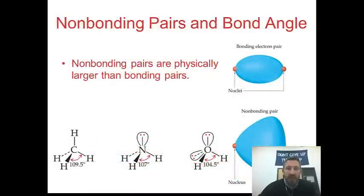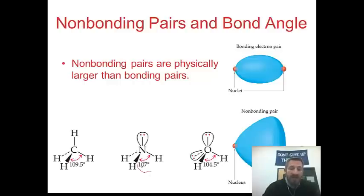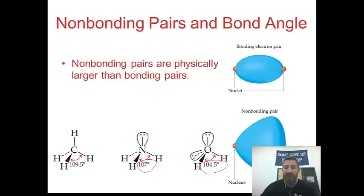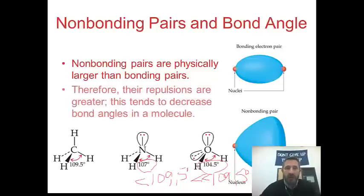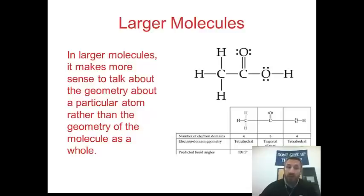Non-bonding pairs are physically larger than bonding pairs because those electrons are closer to the central atom. That's why going from CH4 to ammonia to water, the angle decreases. The three angles to memorize are 180, 120, and 109.5 degrees. Rather than memorizing 107 or 104.5, just say the ammonia angle is less than 109.5 and the water angle is even less than 109.5 because there are two lone pairs. For larger molecules, we talk about the geometry around a particular atom rather than the geometry of the entire molecule.